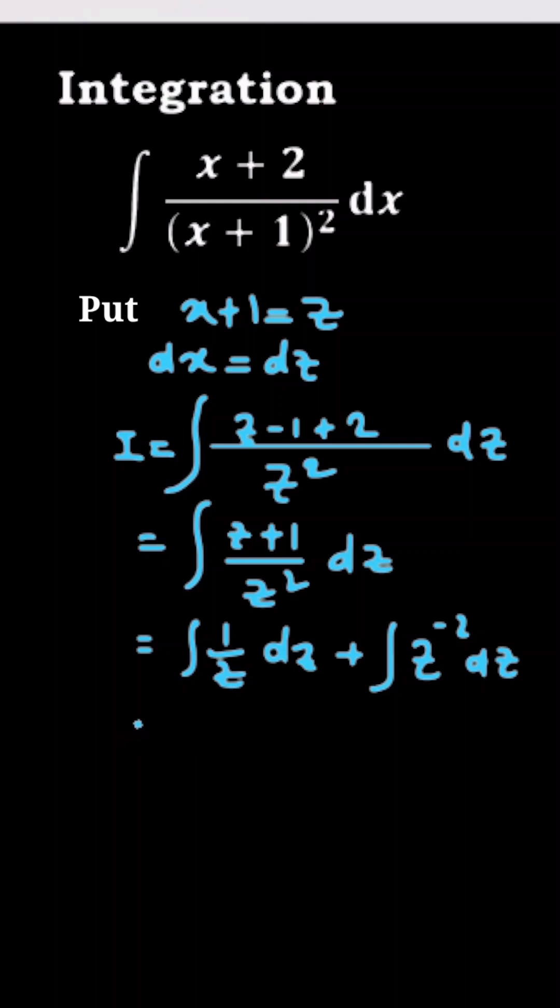Now you can apply the formula of integration directly. The integration of 1 by z will be log of z, plus you have z to the power minus 2. So it will be minus 2 plus 1, that is minus 1, and it will be minus z to the power minus 1 plus c.